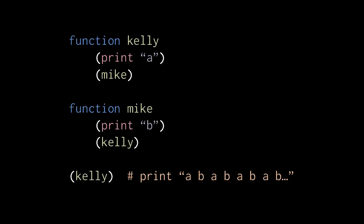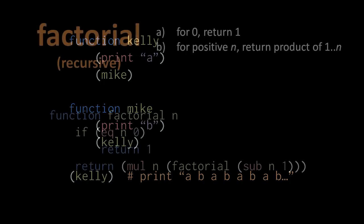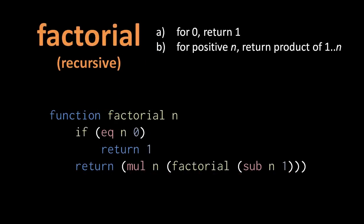Now, in both of these examples of recursion, the recursion is infinite, resulting in unending loops. This infinite recursion is not generally desirable — we don't want our programs to get stuck doing the same thing forever. Usually when writing recursive functions, we want them to stop invoking themselves at some point.